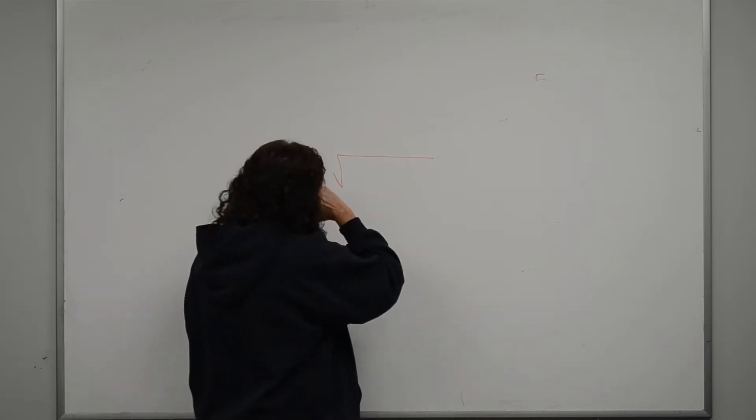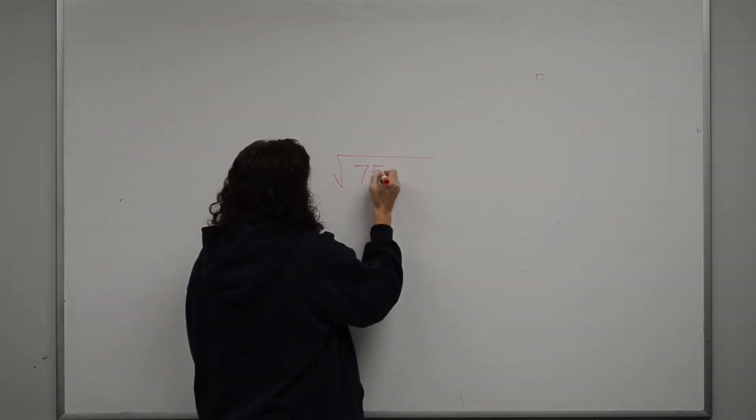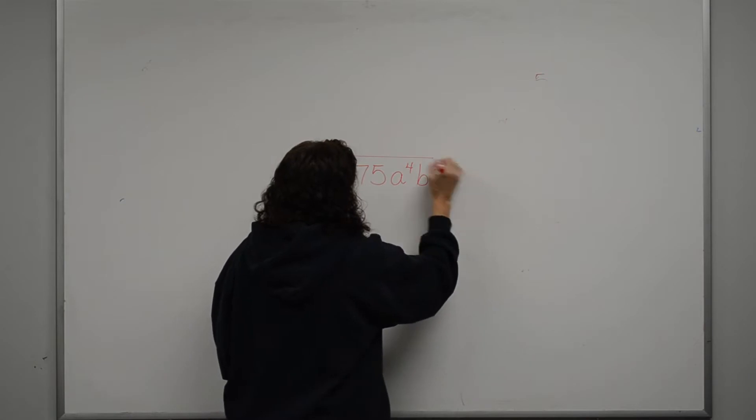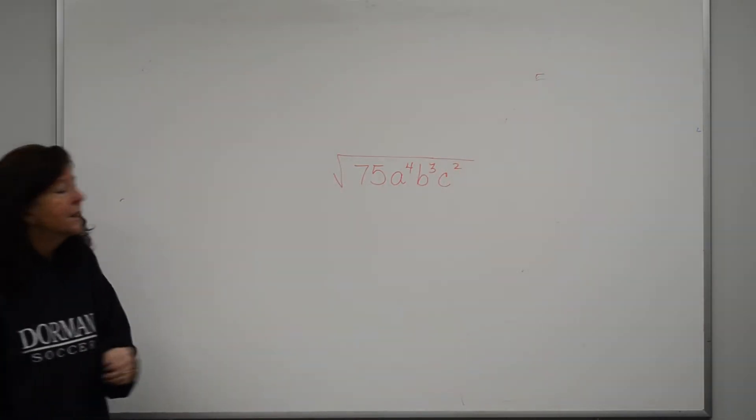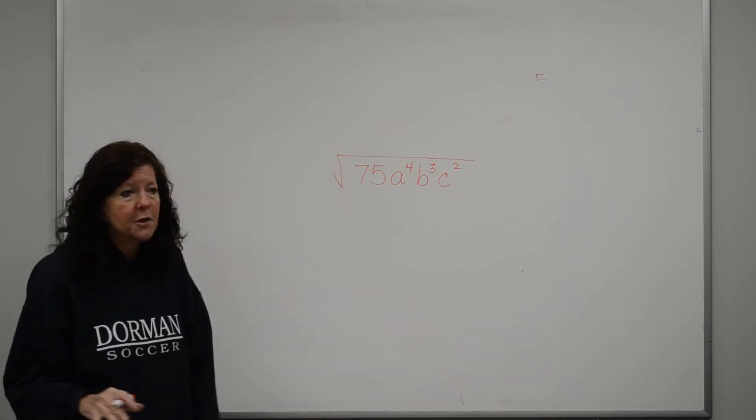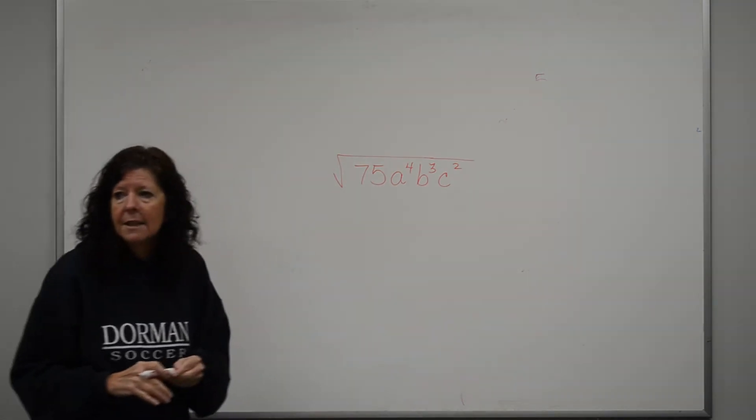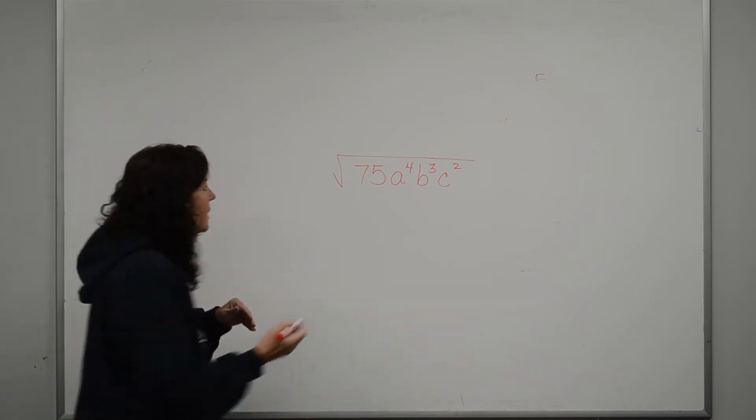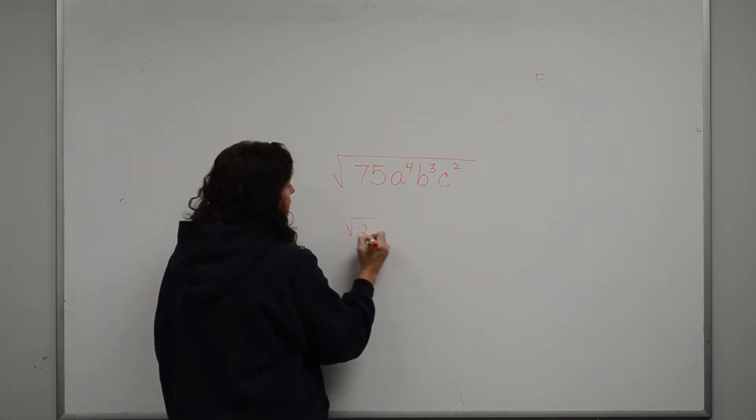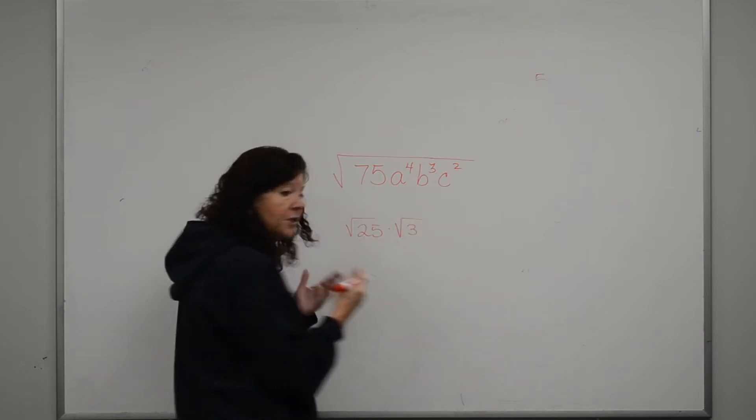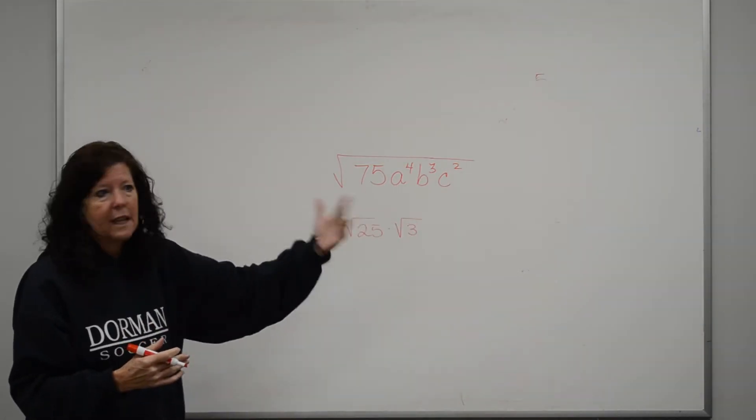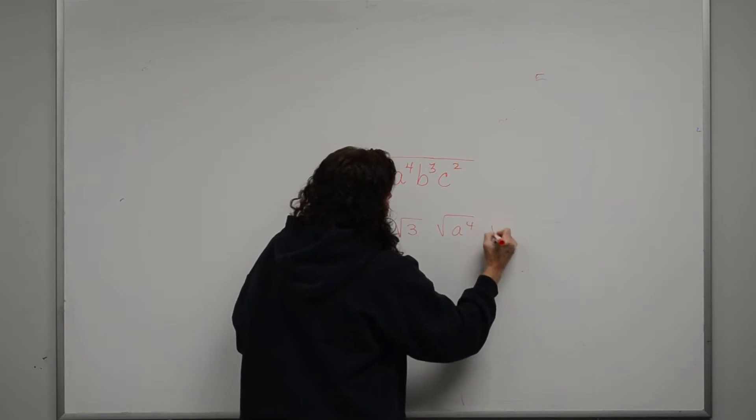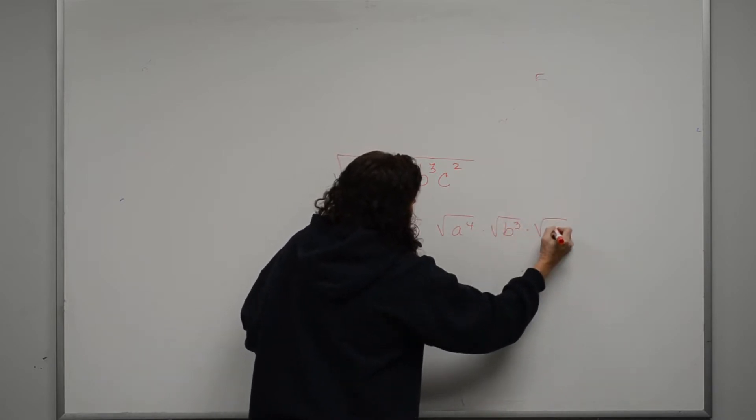So let's say I have the square root of 75a to the 4th, b to the 3rd, and c squared. Okay, so I look at this, and I look at the number, and this is a square root. Okay, there's an understood 2 there. What can I multiply together to get 75 that I can take a root of? 25. So I'm going to look at that as the square root of 25 times the square root of 3. Now, if you need to, write them all out individually. If you don't need to, and you can do it in your head, just do it that way. Okay, square root of a to the 4th, square root of b to the 3rd, square root of c squared.